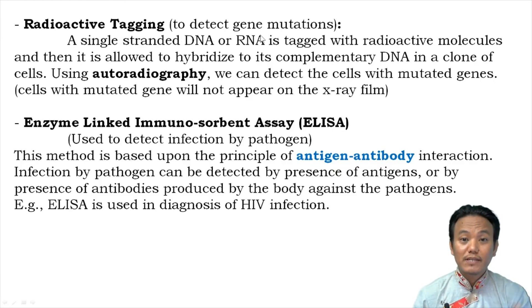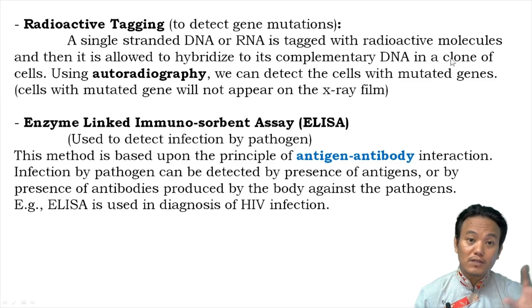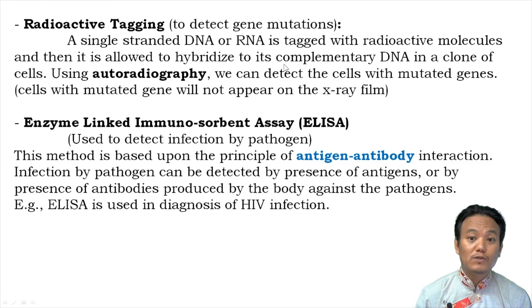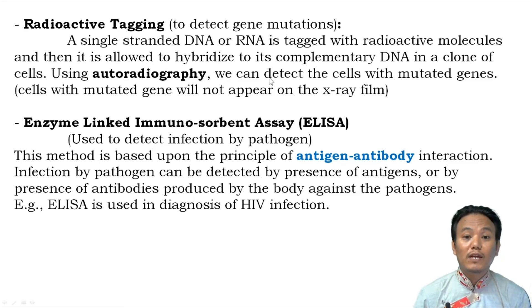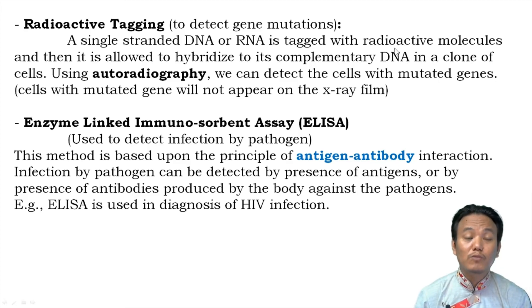We also have the radioactive tagging method to detect gene mutations. In this method, a single-stranded DNA or RNA molecule is tagged with radioactive molecules, creating a probe. This probe is allowed to hybridize to its complementary DNA sequence in a clone of cells taken from the suspected patient's body and grown in vitro. By using autoradiography — an imaging technique — we can detect cells with mutated genes. Cells containing mutated genes will not appear on the X-ray film because they lack the complementary DNA sequence needed for the probe to bind.